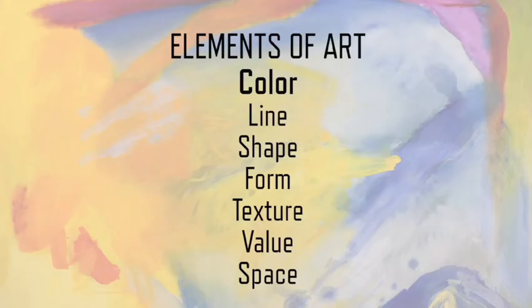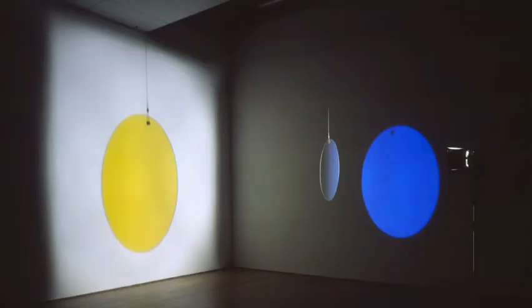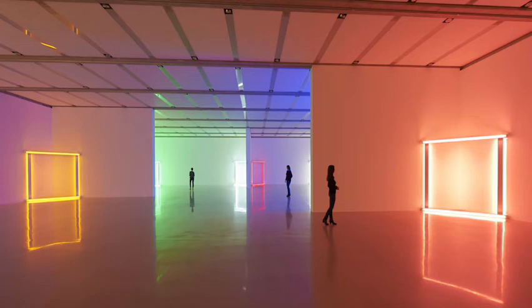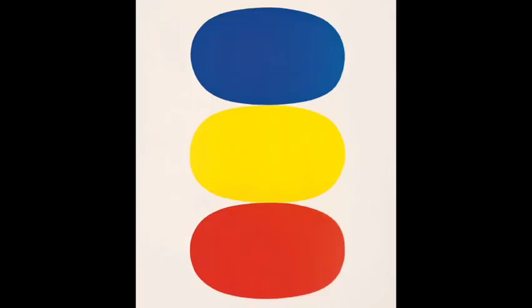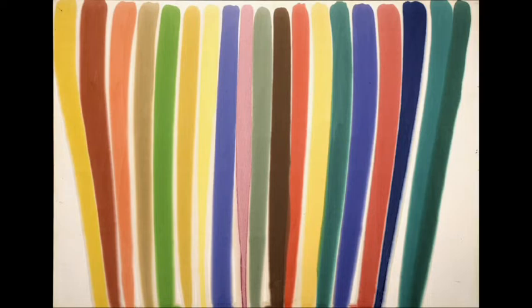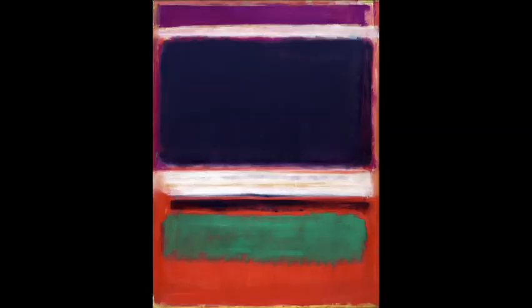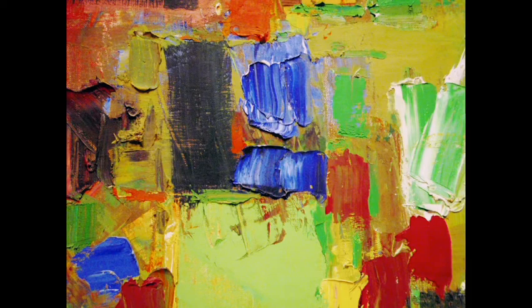Color is one of the seven elements of art, along with line, shape, form, texture, value, and space. When light hits an object, some of it is absorbed and some of it is reflected, depending on the materials the object is made of. The light that is reflected off of the object is what we see as an object's color. Red, yellow, and blue are called primary colors because they cannot be made from the mixing of other colors. However, the three primary colors can be mixed together to produce nearly every other hue imaginable. Green, orange, and violet are the three secondary colors, created by mixing two of the primary colors together in equal amounts.